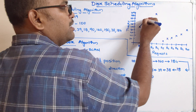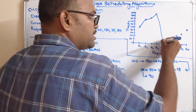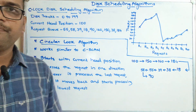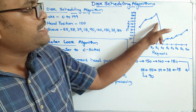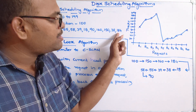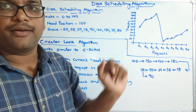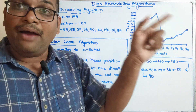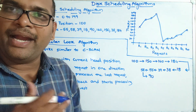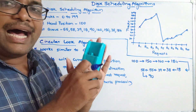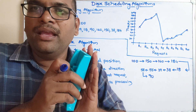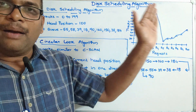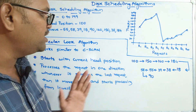So the head moves in one direction and then immediately starts from the lowest request. Comparing this to C-SCAN: in C-SCAN after reaching the last request it moves all the way to the last track (e.g., 199), then comes back to 0, and starts processing again. But in C-LOOK, unnecessary movement is avoided — after 184 the head comes directly back to the lowest request, which is 18.